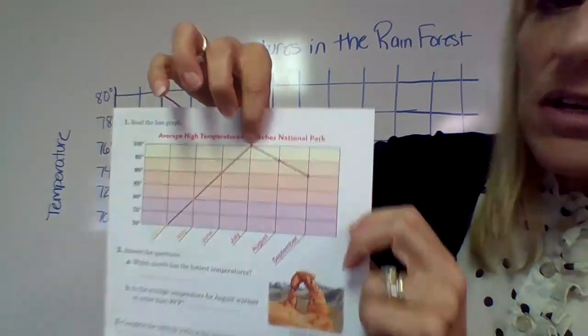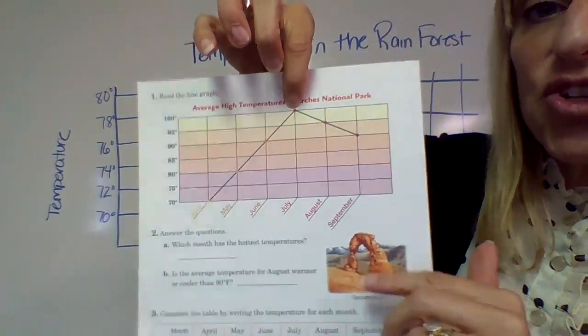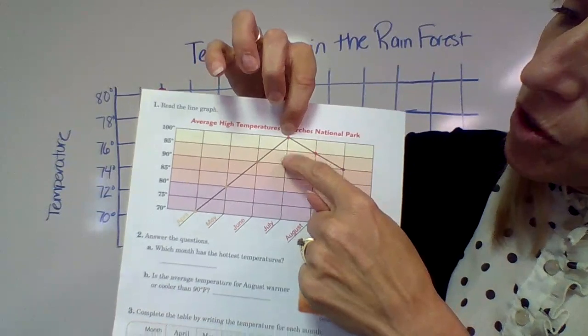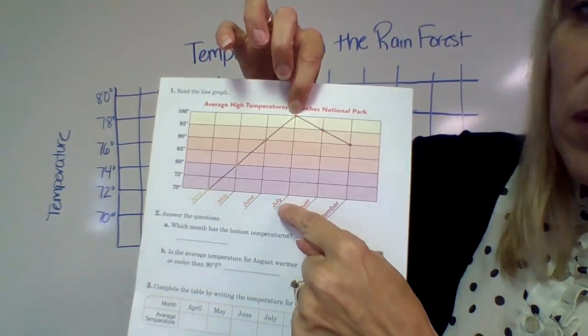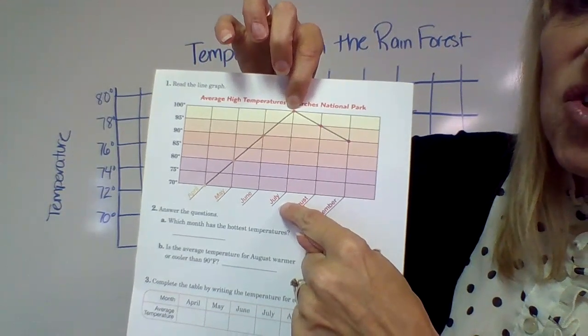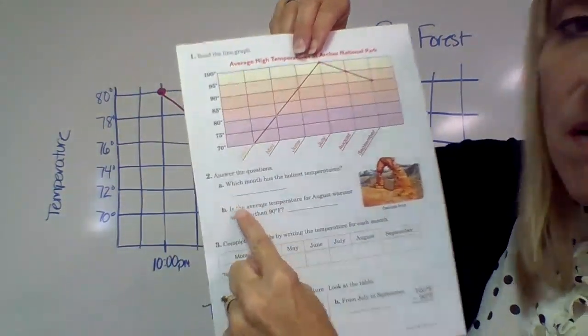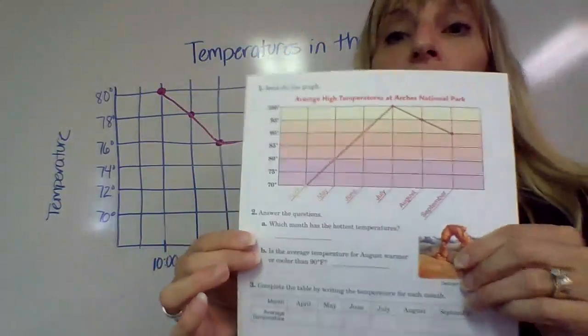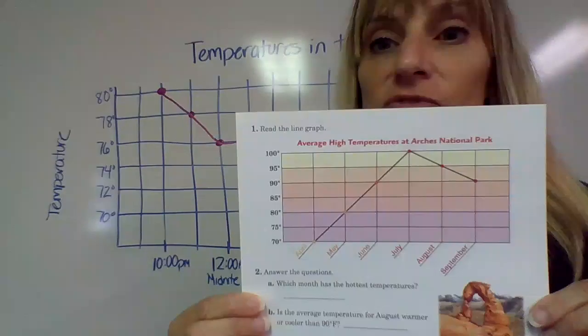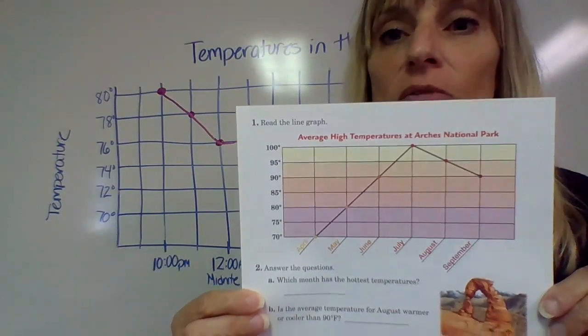And if we go here to 100 and go all the way across, there is a dot at 100. Now we're going to go down, down, down. Look at it, it's July.